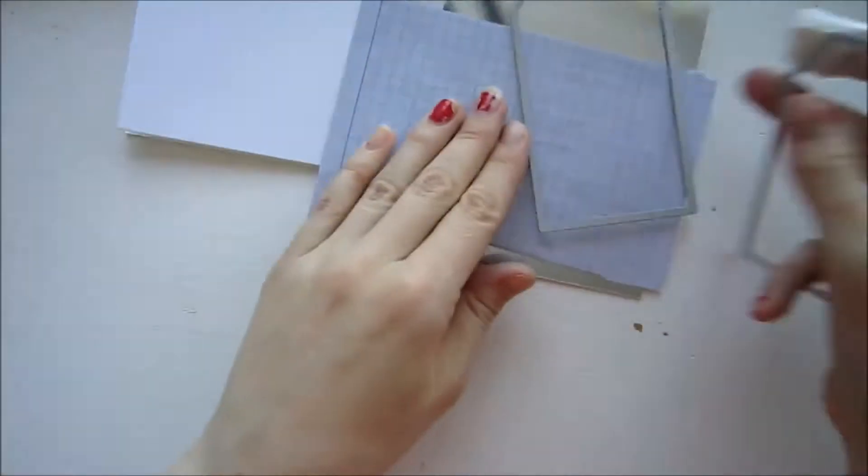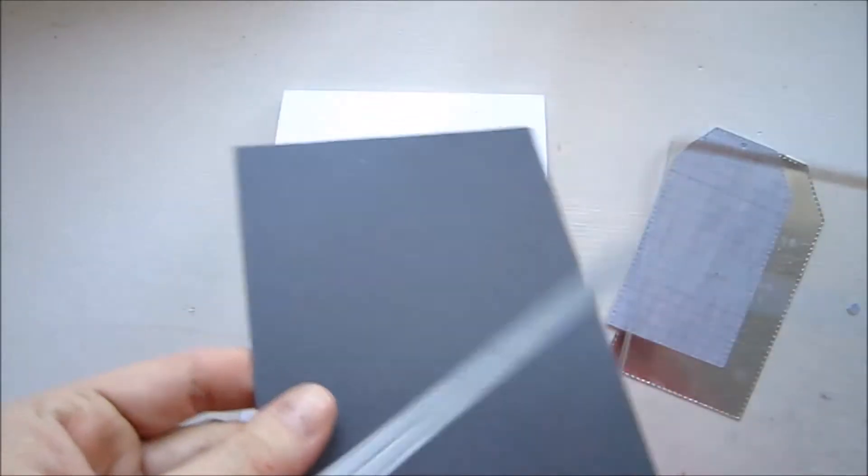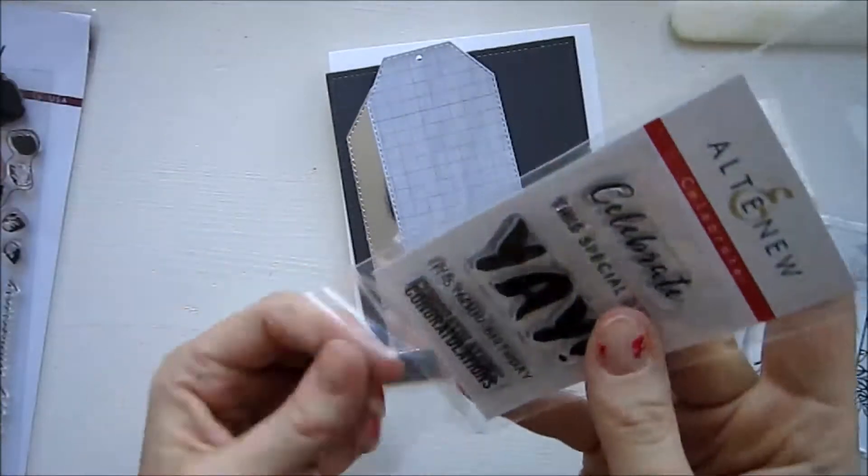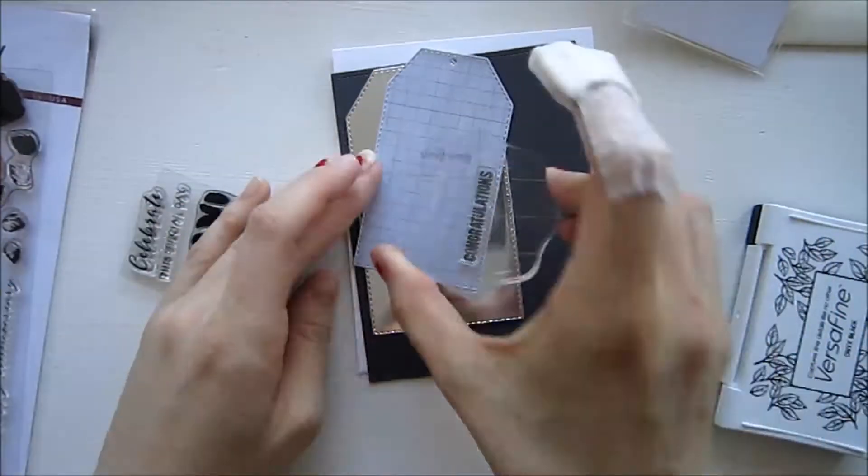I'm going to take this silver foil paper, and I'm sorry about the glare in that paper, and we're going to create some tags. I also used a stitched rectangle from Lawn Fawn to cut out this gray cardstock.